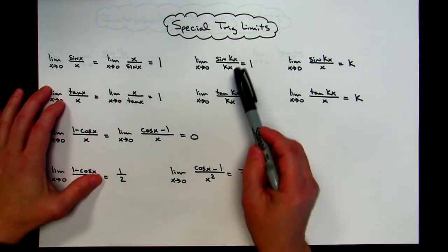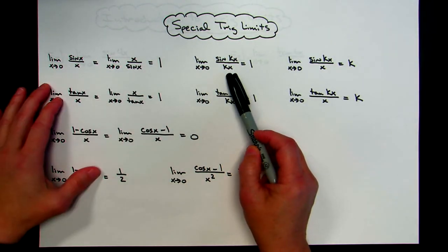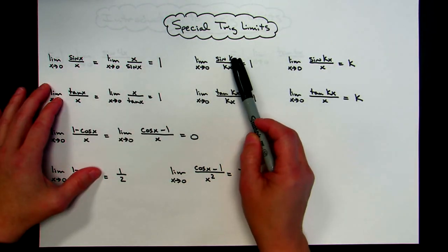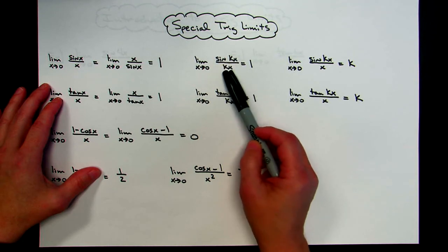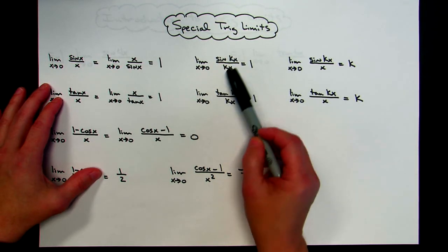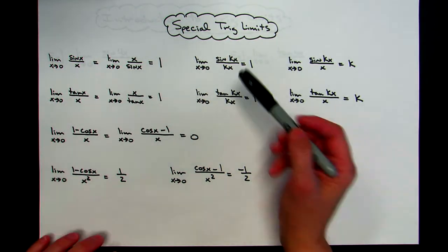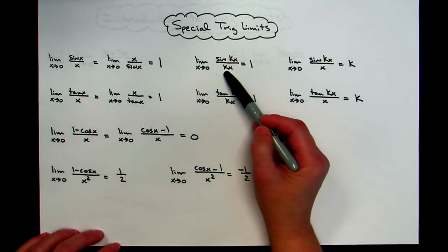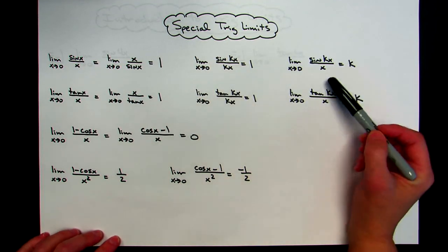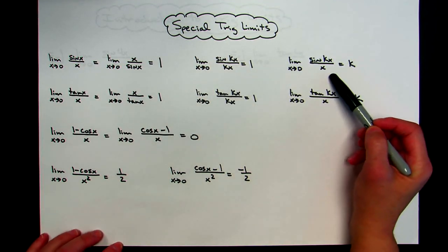Staying with sine, this is also a common special trig limit. Whatever you have — sine of kx over sine of kx — a lot of times people put a smiley face to indicate you're taking the sine of something and that exact same something is on the bottom. That limit is also going to be 1, and this one comes in handy especially on a multiple choice test.